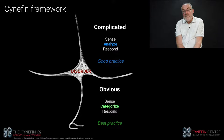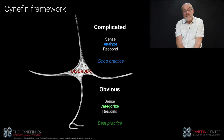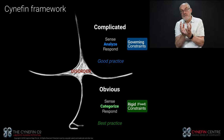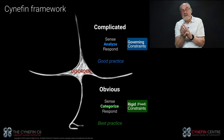In ordered systems — obvious and complicated — the decision models are sense-categorize-respond or sense-analyze-respond, applying best practice or good practice respectively. Coming back to constraints: in an obvious domain I have rigid or fixed constraints. In a complicated domain I have governing constraints — the boundaries are defined, but within those boundaries a greater degree of variation is allowed.